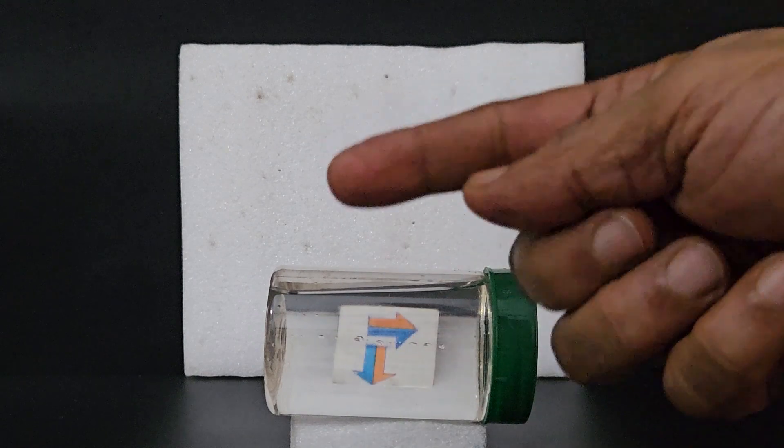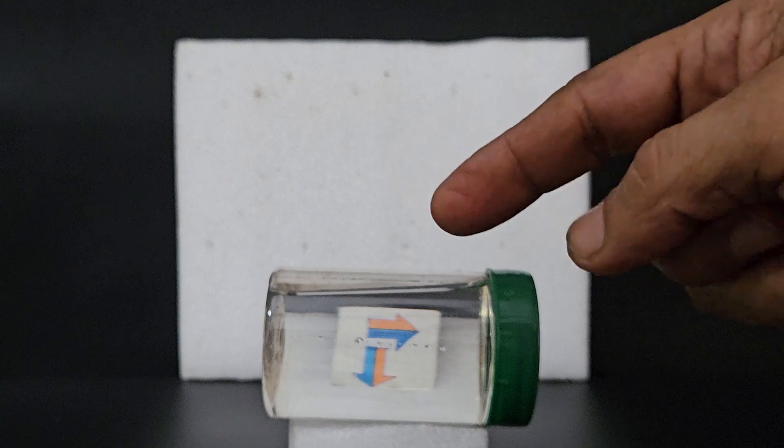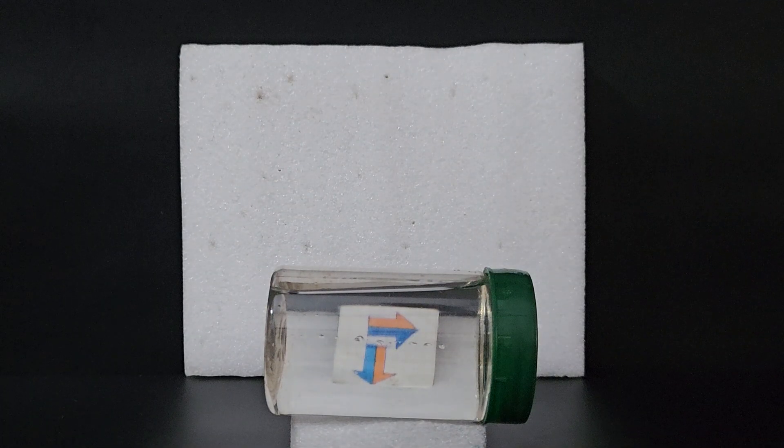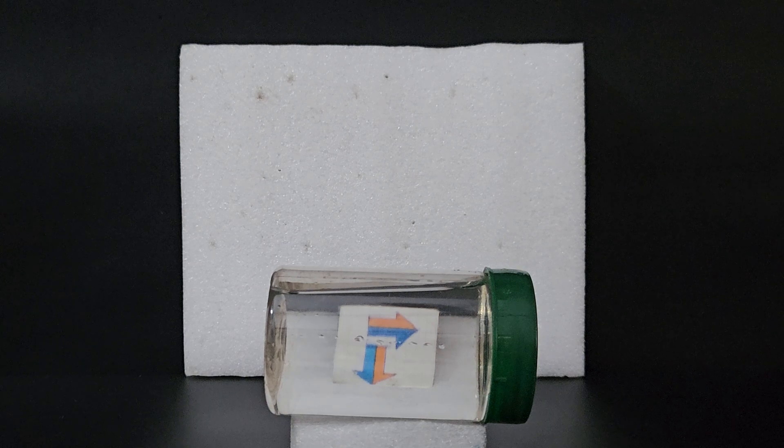Again refraction due to water but now the curvature is like this. Earlier the curvature of the container was like this, now it is like this. Again the water and the curvature of the container forms a bi-convex lens.